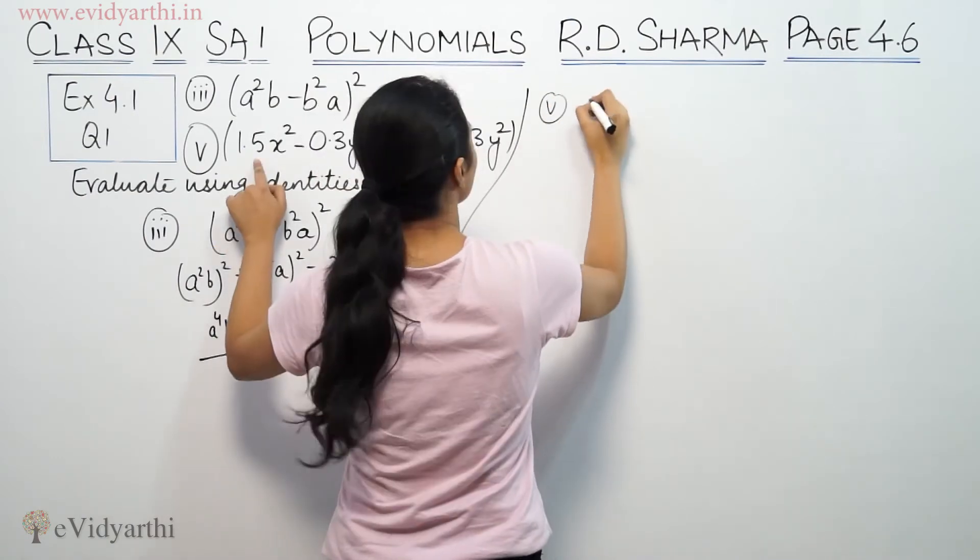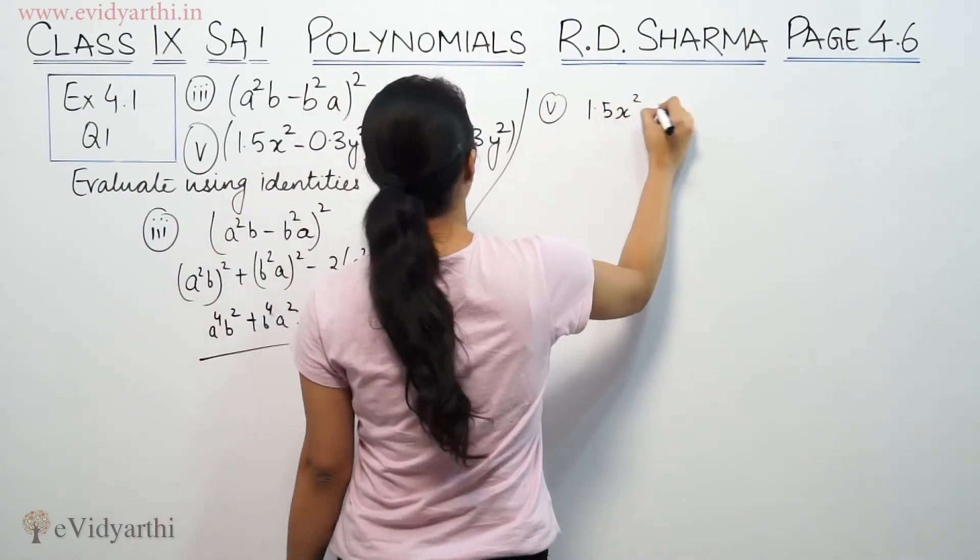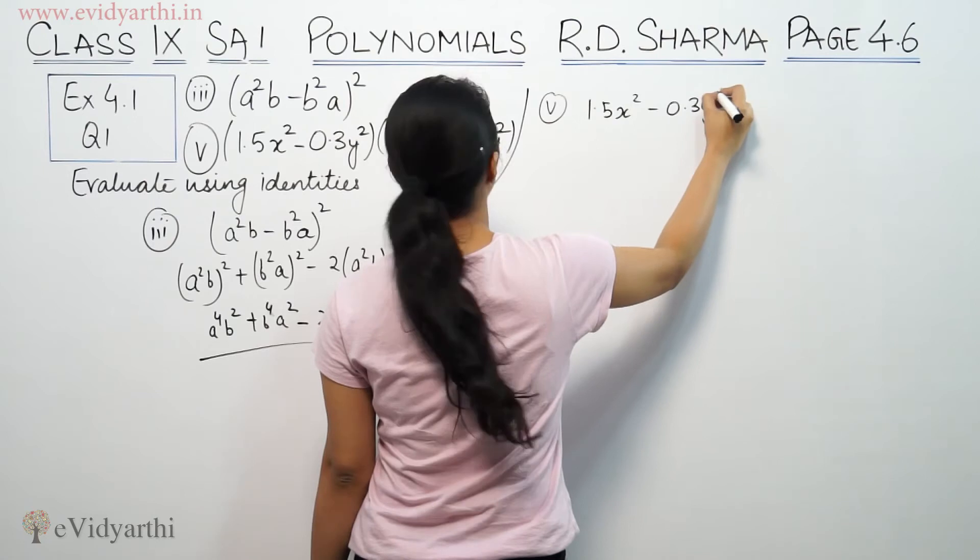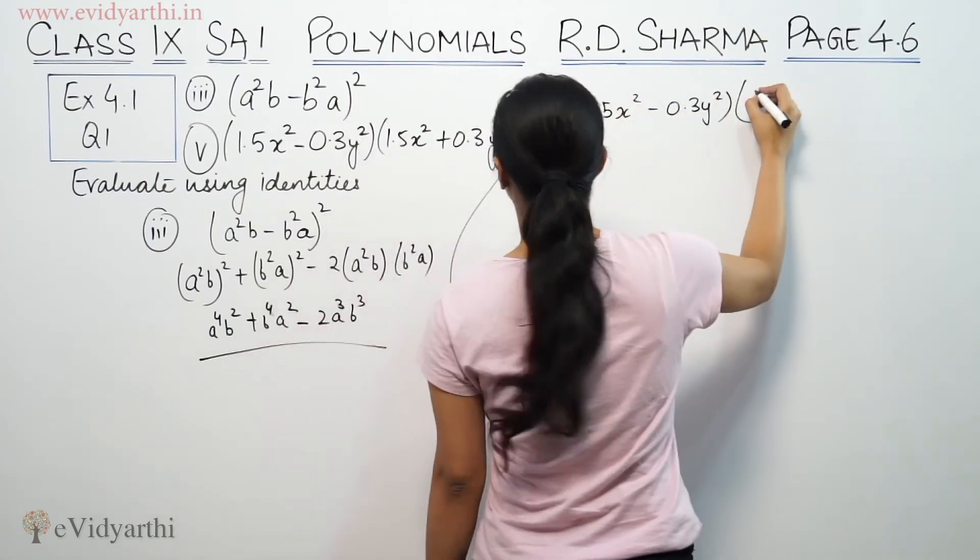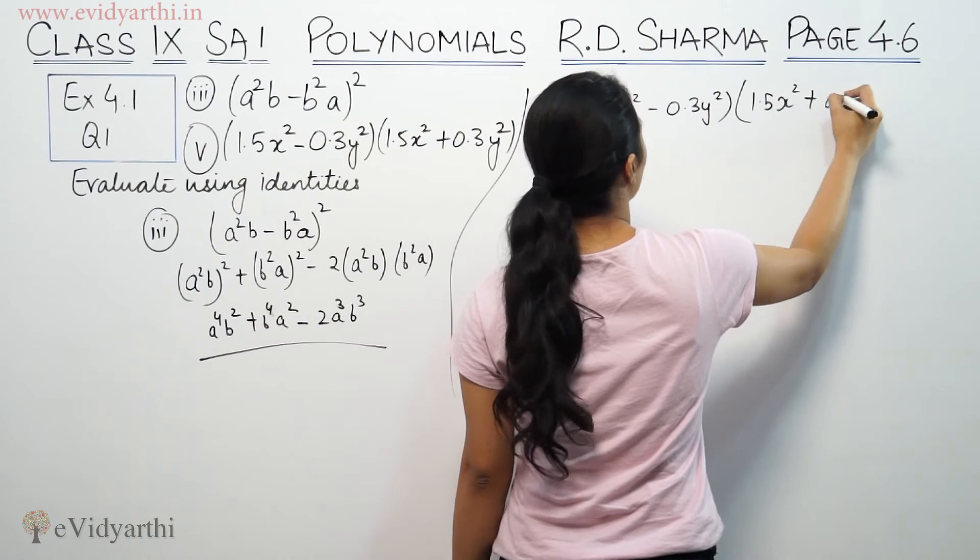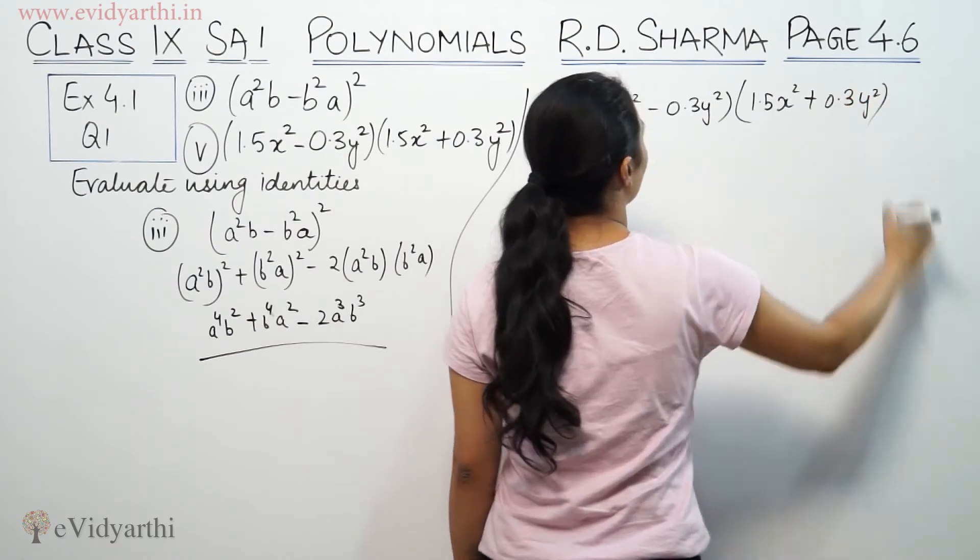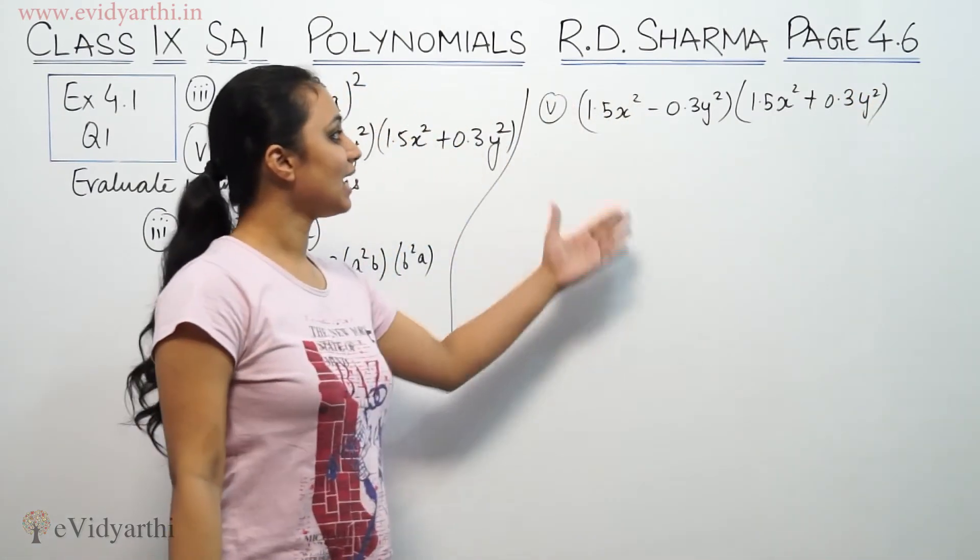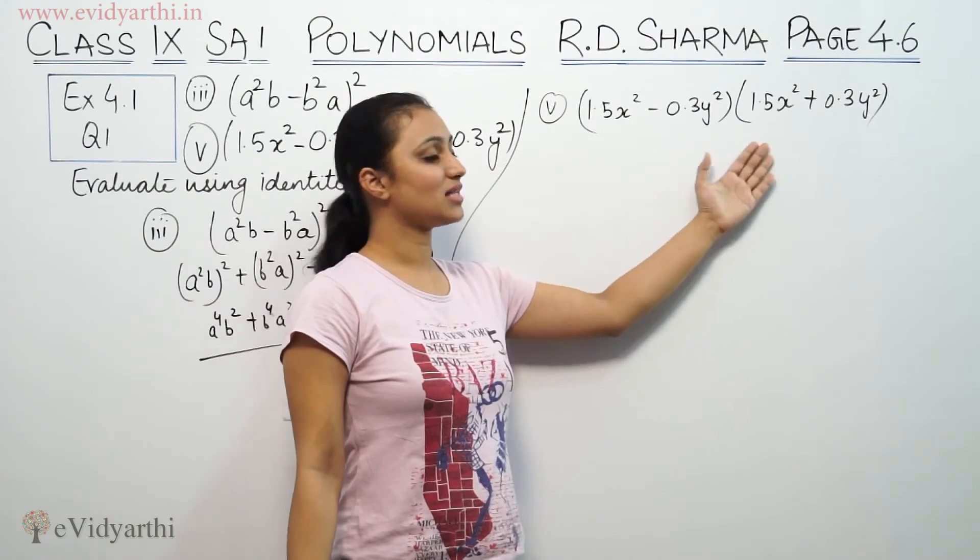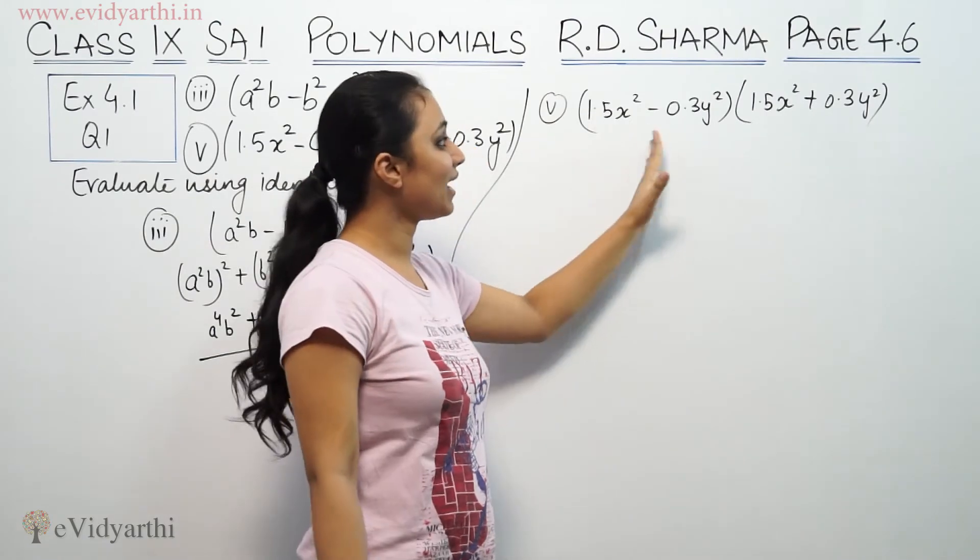In the fifth part, this is 1.5x² - 0.3y² times 1.5x² + 0.3y². This is a² - b² form, which equals (a - b)(a + b).